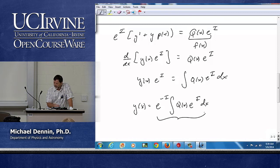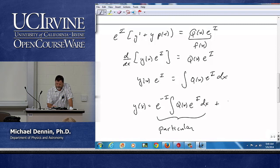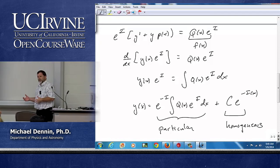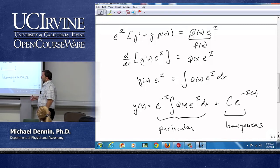Now, this is my particular solution. Remember, I do always, in general, have to add back in the homogeneous solution. Because, of course, if I take d by dx of that, I'm going to get zero and that doesn't affect anything.